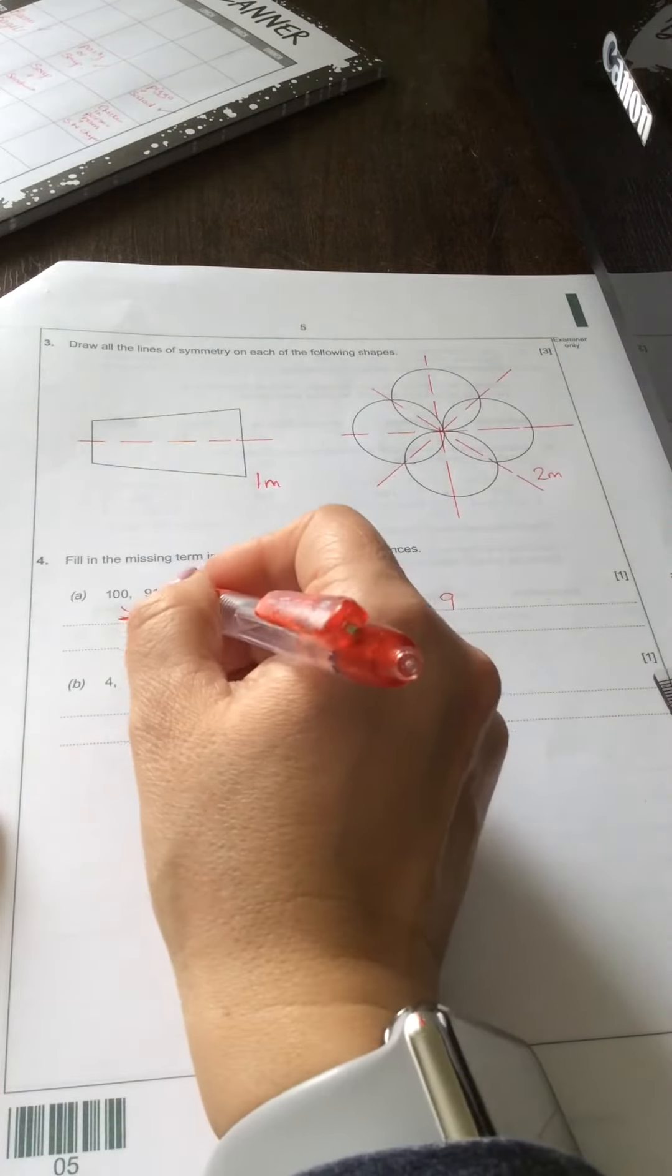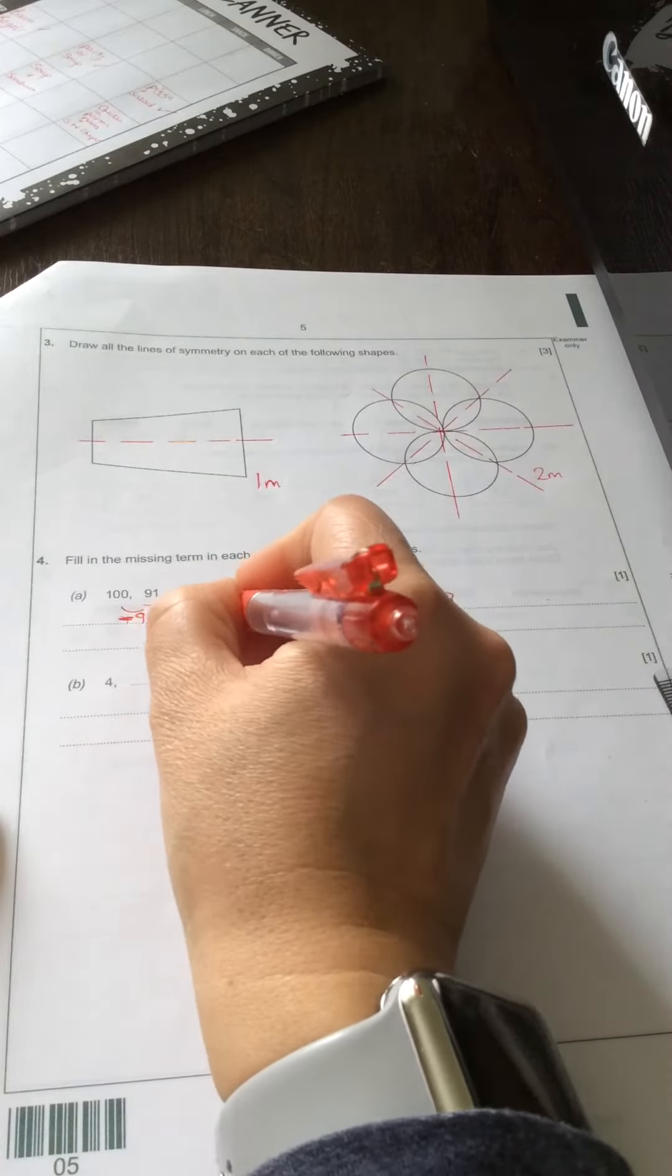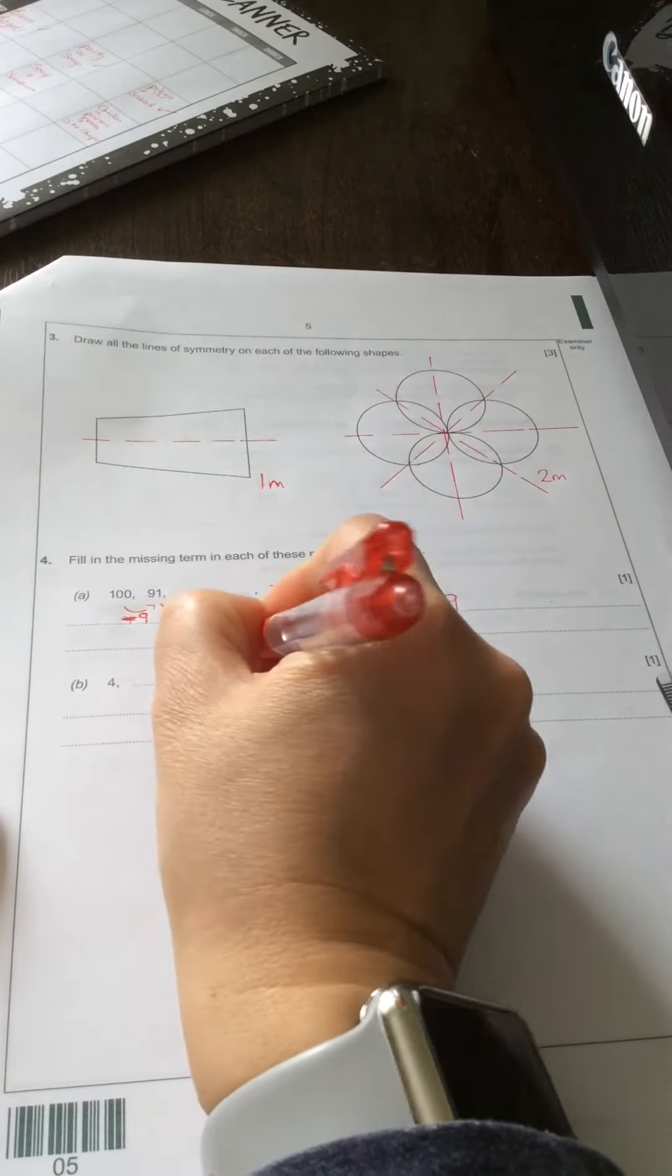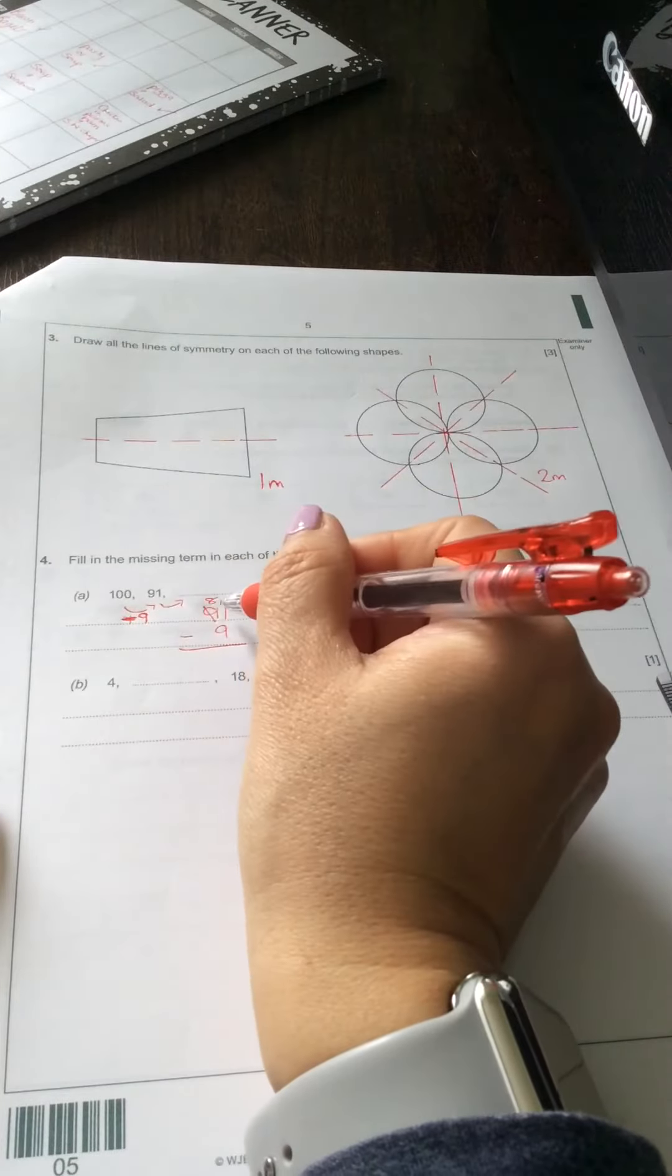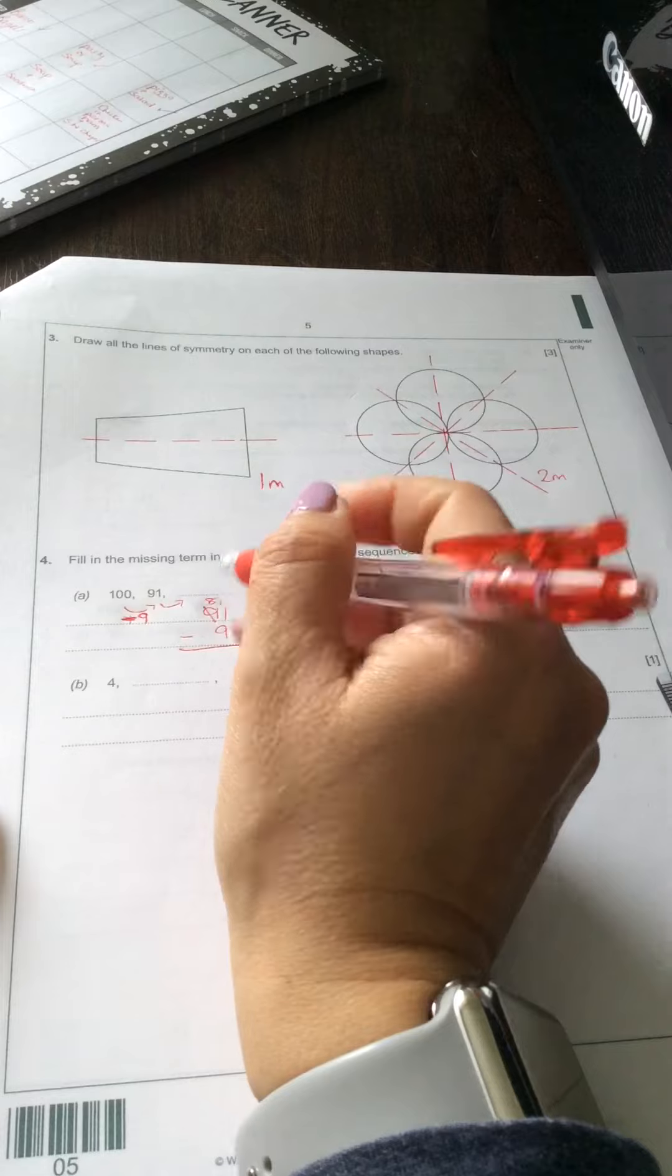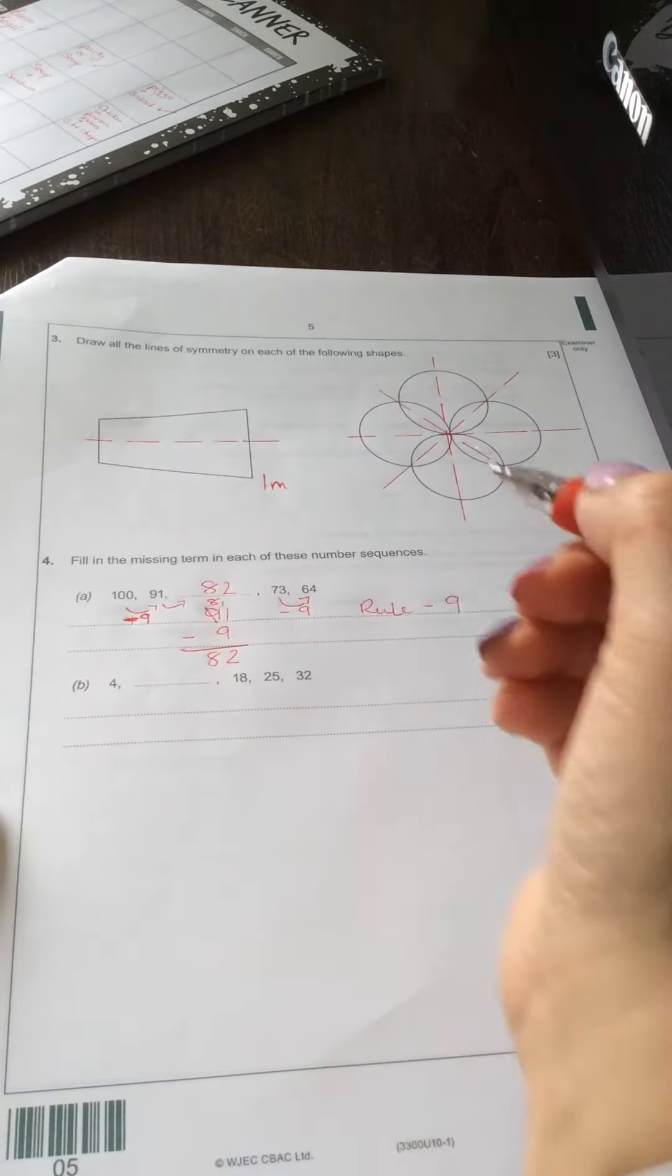So to find the missing number, I'm going to do 91 take away 9. 11 take away 9 is 2, so 82 is our missing number.